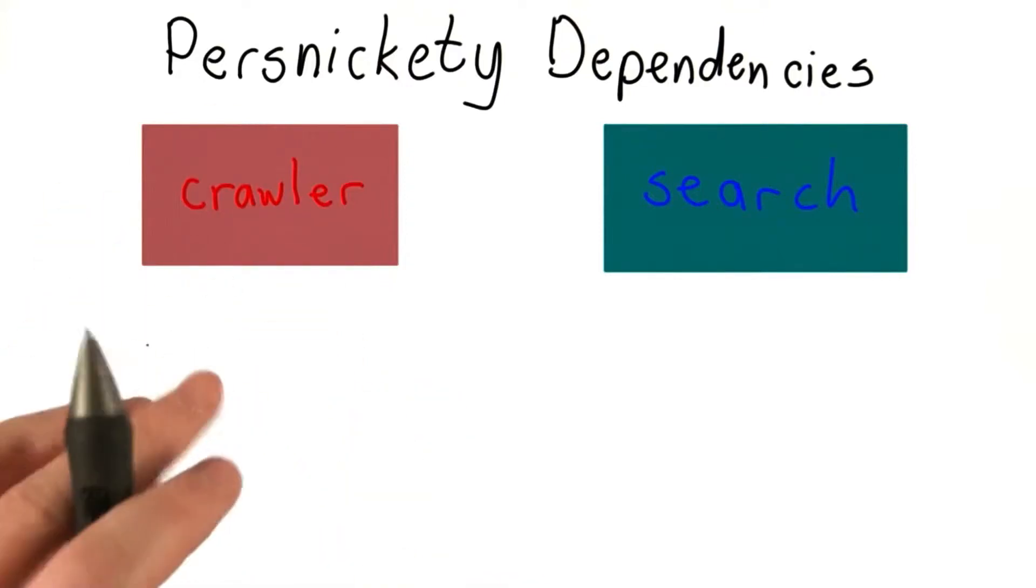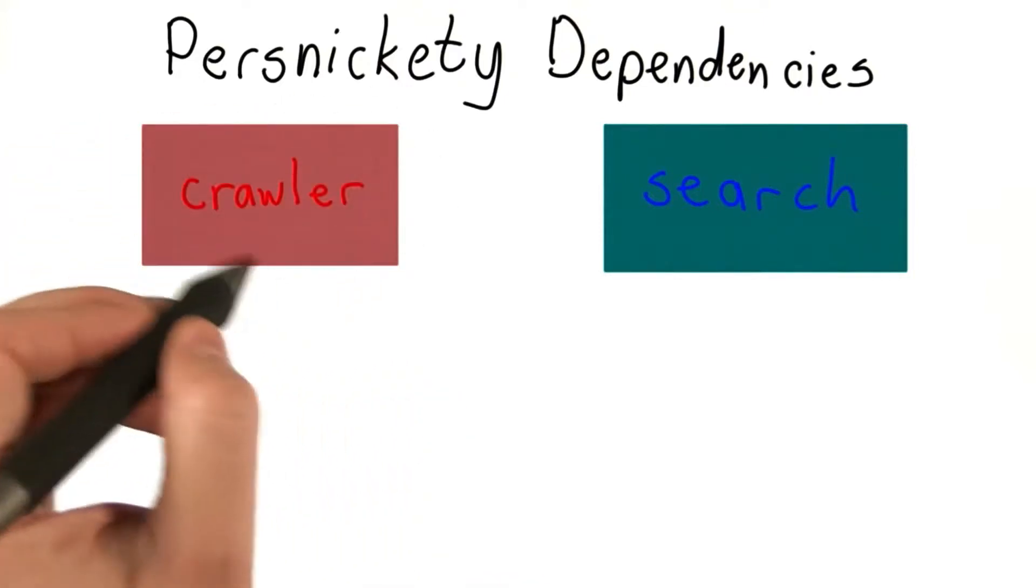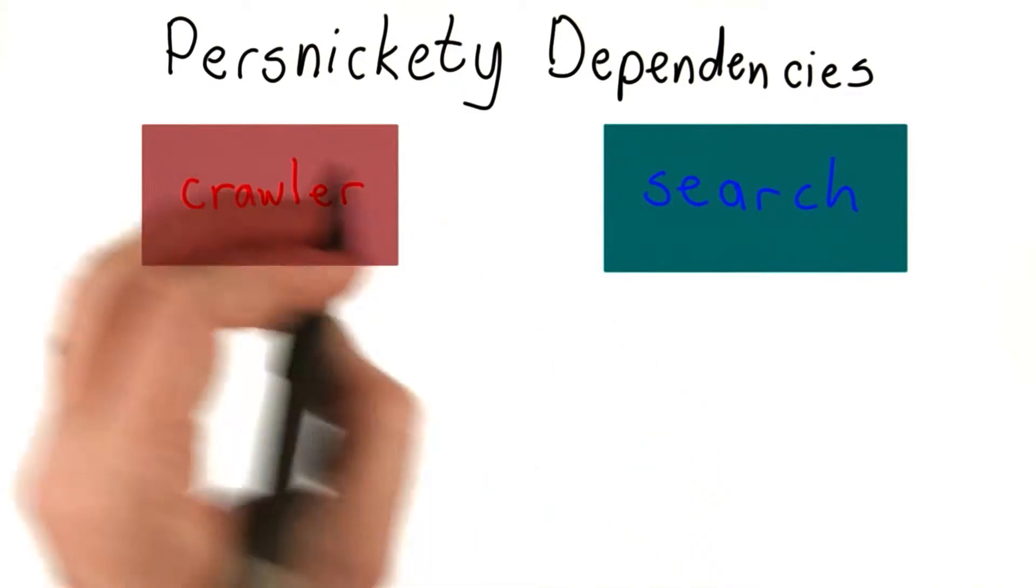So let's get back to thinking about how modules help the search engine. We divided the search engine into these two modules: crawler and search.